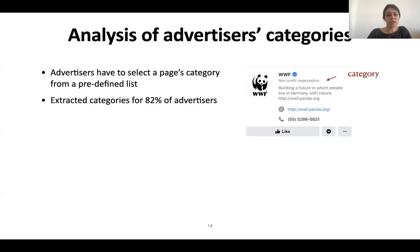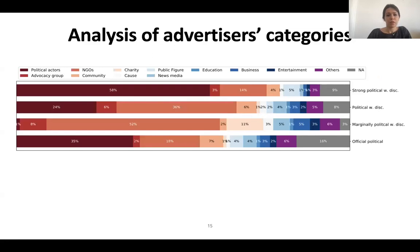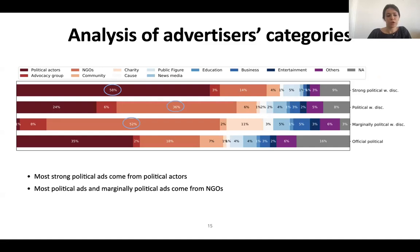Next, we wanted to understand the characteristics of ads labeled as political. First, we decided to look at advertiser category. When advertisers create a page, they have to select a category from a predefined list. We extracted categories for 82% of advertisers and similar categories were grouped together. We find that most strong political ads come from political actors. In the political ads group and marginal political ads group, most ads come from NGOs. Official political ads have a wide variety of advertisers. A vast range of advertisers are pushing political ads online, and volunteers label ads as political from a diverse set of advertisers.